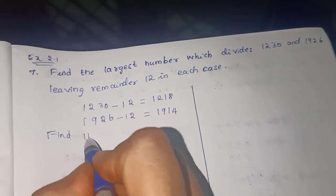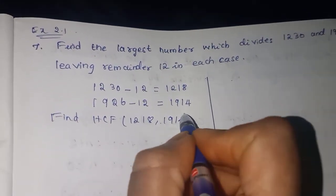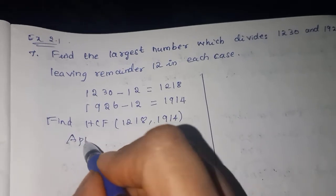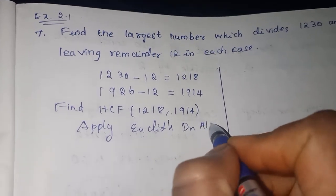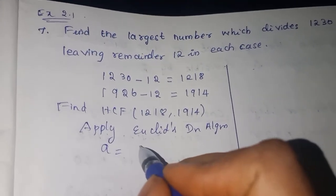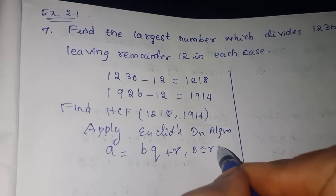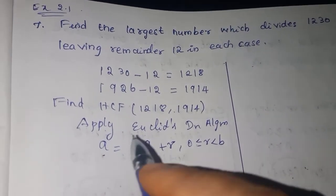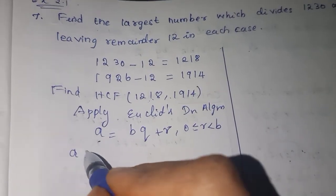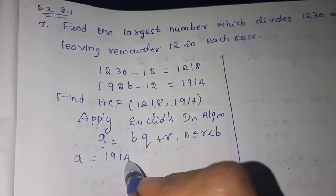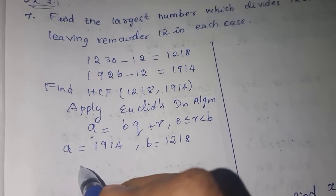We apply Euclid's Division Algorithm. The formula is: A = (divisor × quotient) + remainder, where 0 ≤ R < B. First, check which number is greater — 1914 is greater, so A = 1914 and B = 1218.